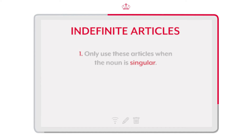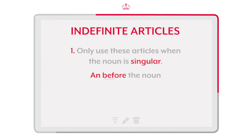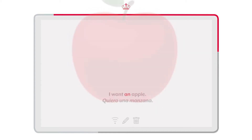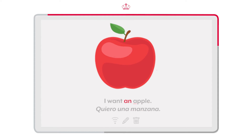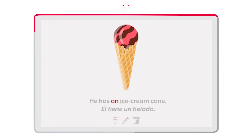Now, we use 'an' when the noun starts with a vowel. Usamos 'an' cuando el sustantivo inicia con una vocal. I want an apple. Quiero una manzana. He has an ice cream cone. Él tiene un helado.